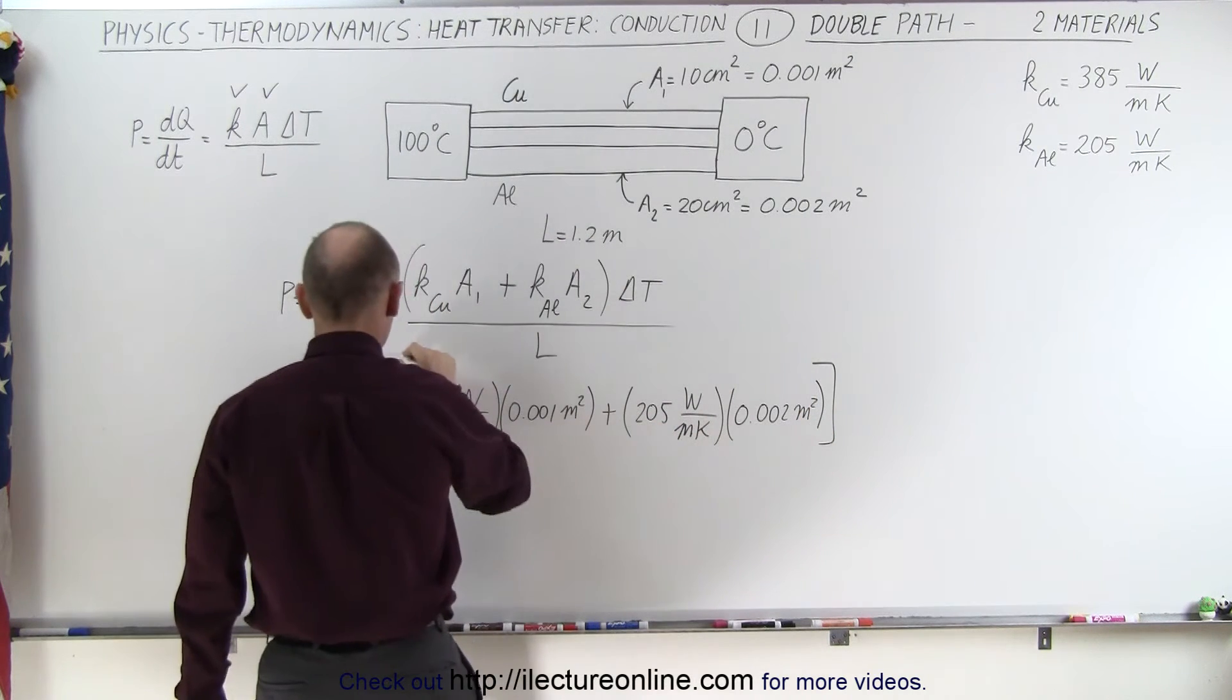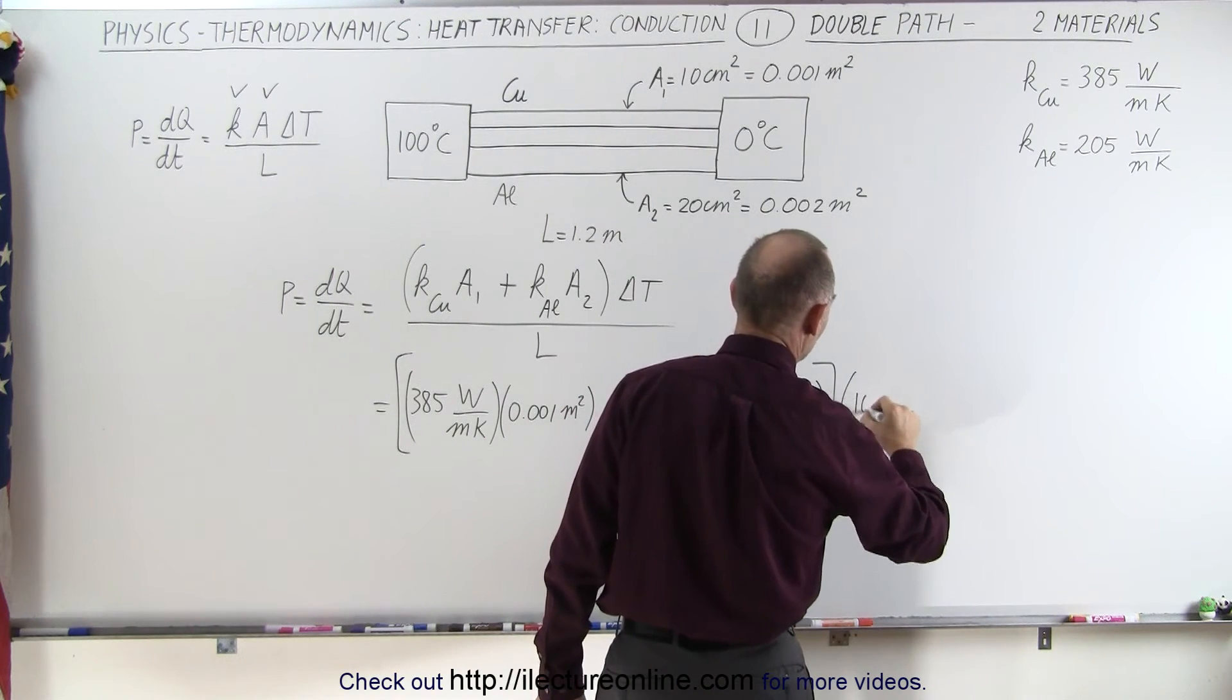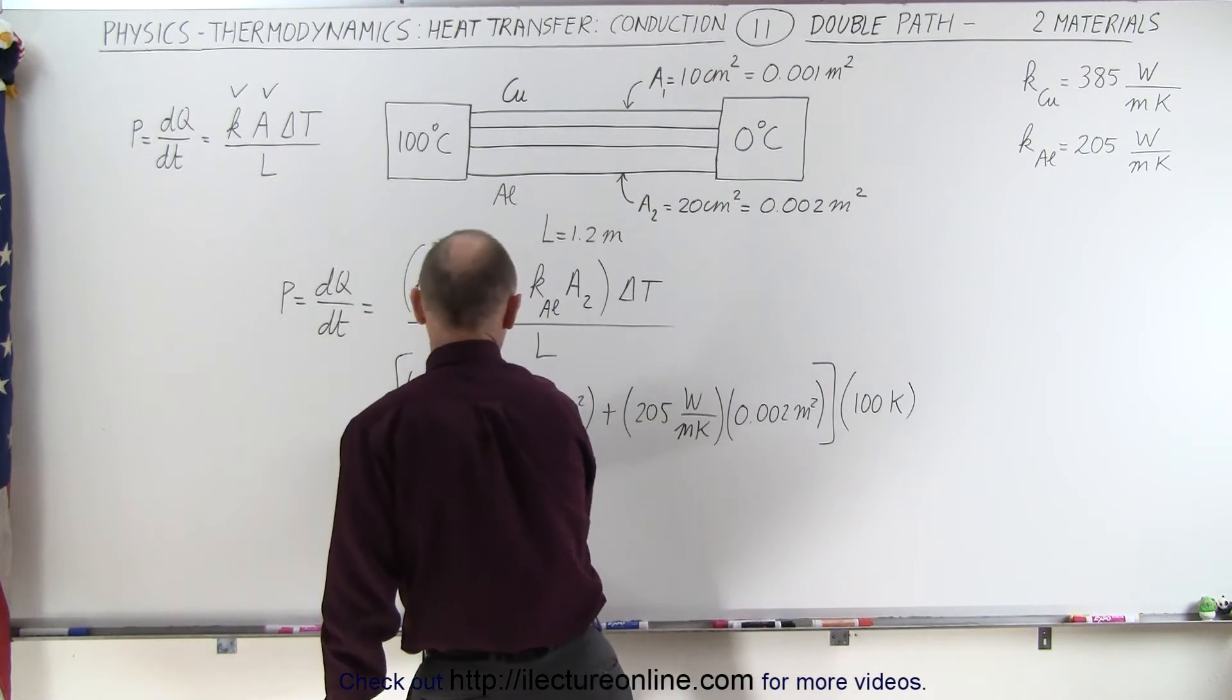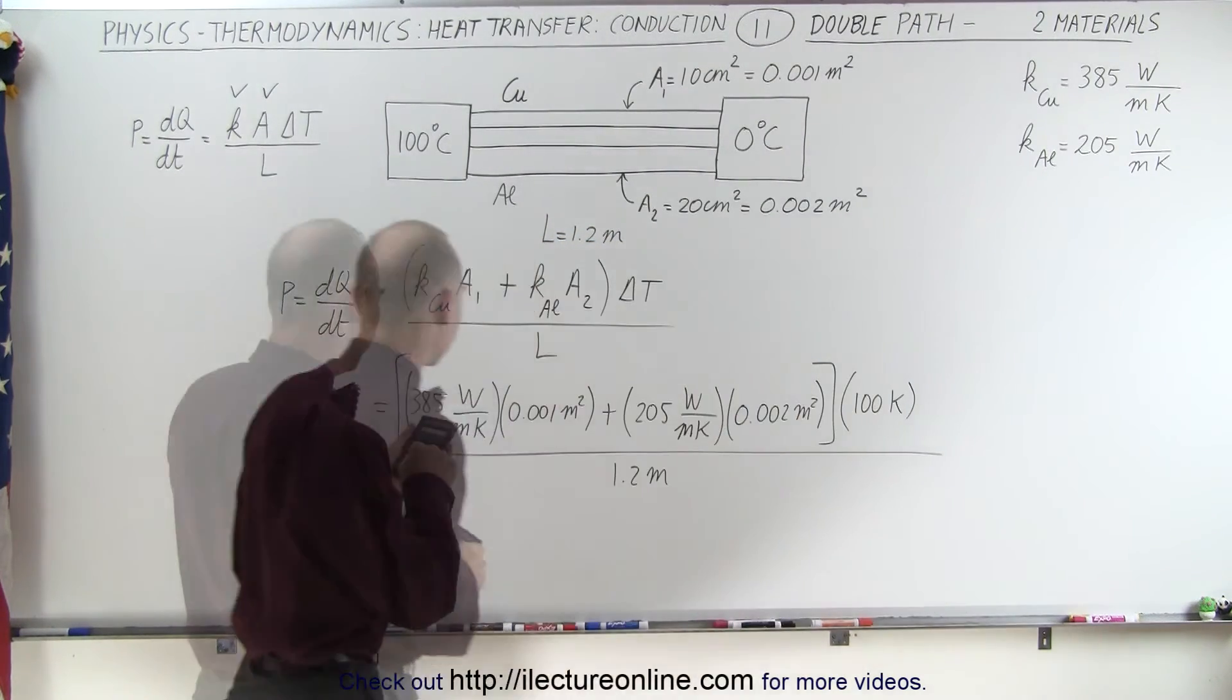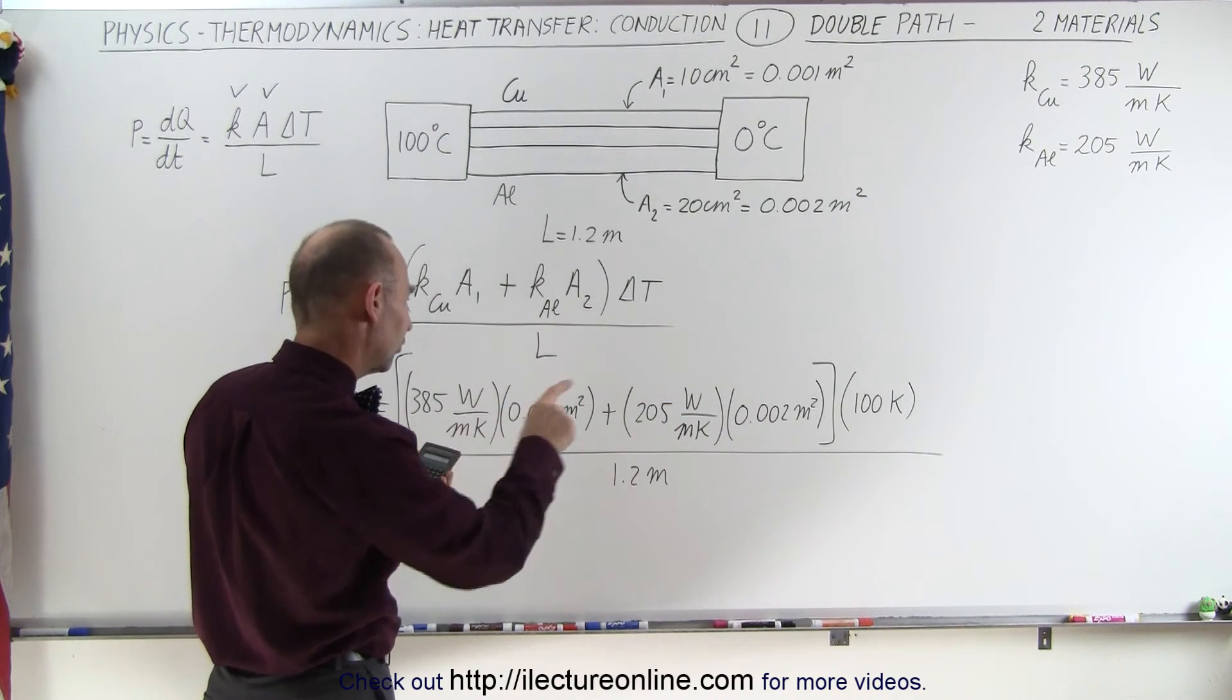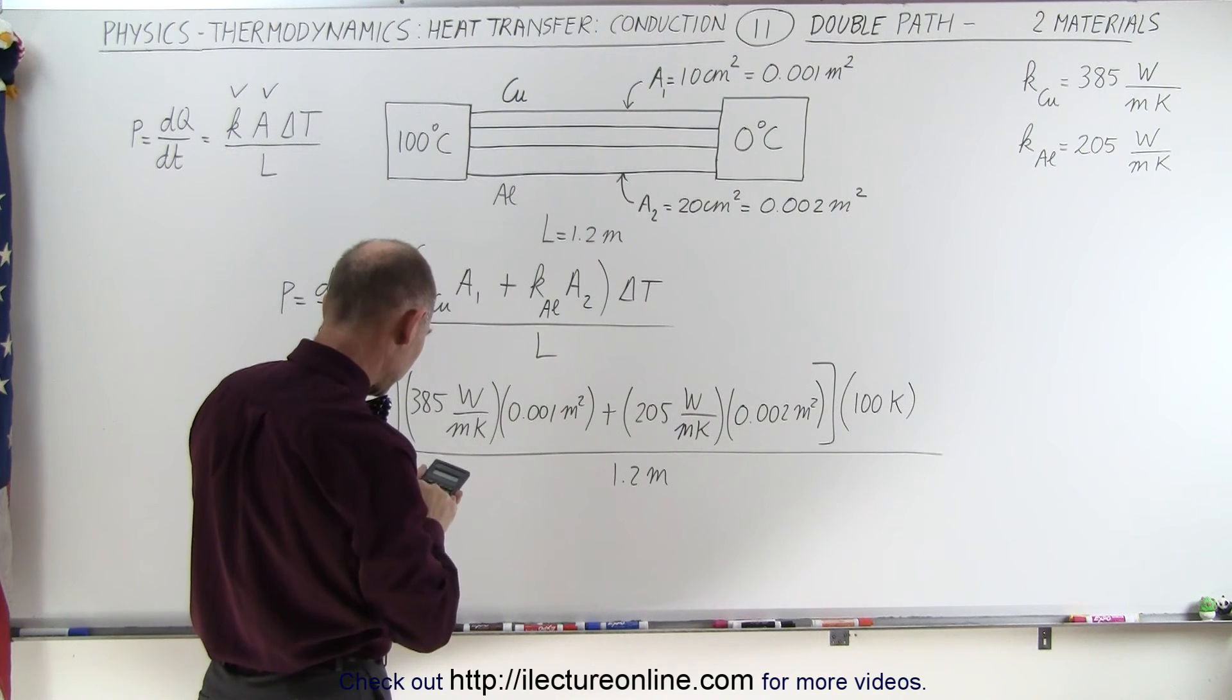So we'll put that in brackets, and we multiply that times everything else and divide by everything else that's the same for both. So we have 100 centigrade degrees, or 100 Kelvins, divided by the length of 1.2 meters. So let's see what that is equal to. 100 times that, so we have 38.5 plus twice that, that would be 41, divided by 1.2.